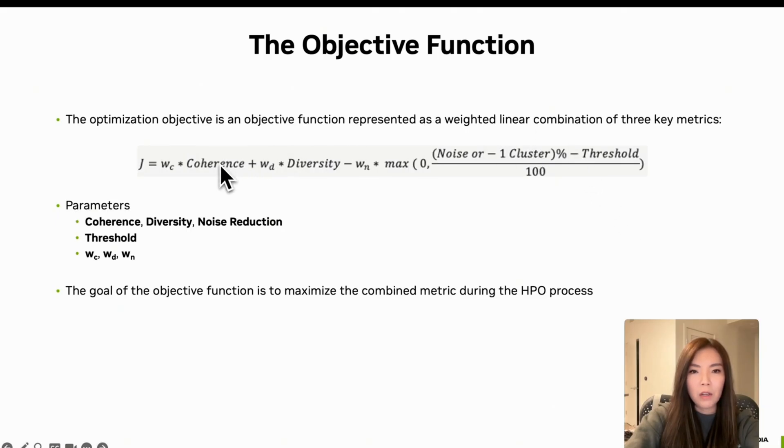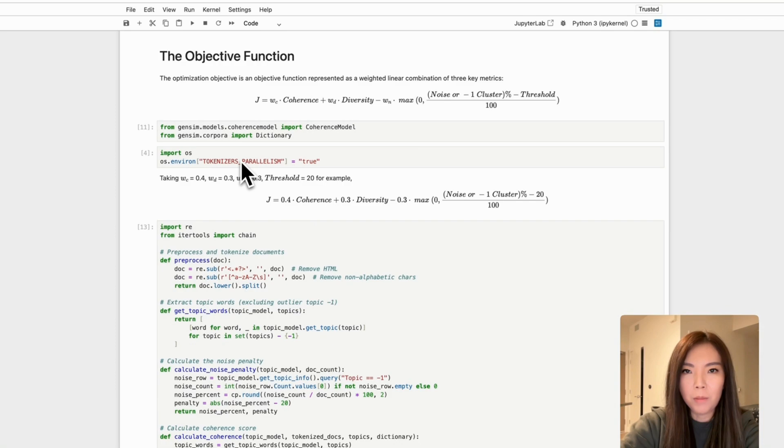In this objective function, coherence is a metric that quantifies the semantic similarity of words within each identified topic. Diversity is a metric that measures how distinct and non-overlapping the identified topics are, promoting coverage of different themes. Noise reduction is a metric that penalizes excessive noise in clustering, ensuring that irrelevant or incoherent topics are minimized. Threshold is the target maximum percentage of noise permissible in clustering results before a penalty is applied. Omega_c, Omega_d, and Omega_n are coefficients or weights that control the relative importance of each term in the optimization. These values are predefined based on the prioritization of metrics and the desired quality of the clusters.